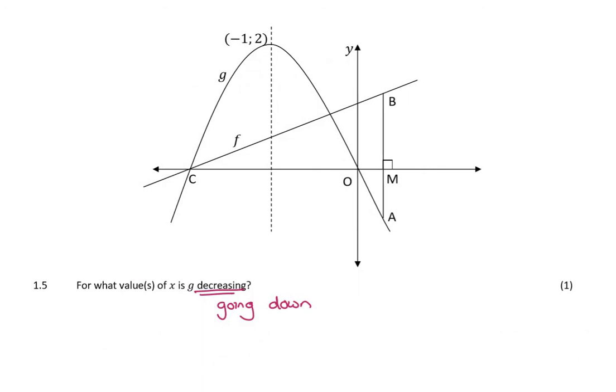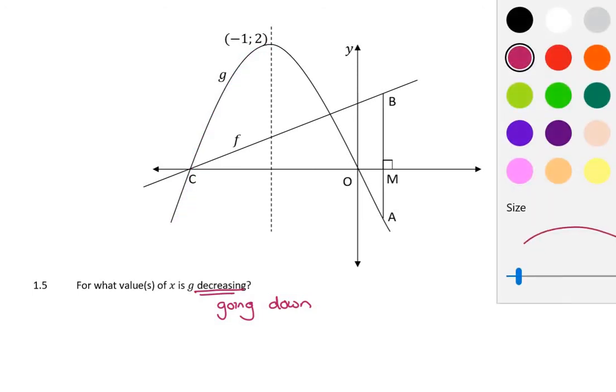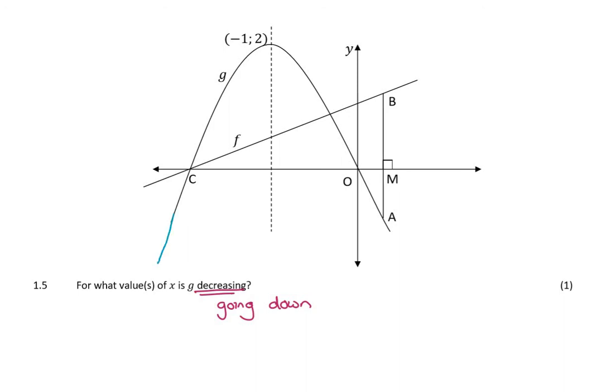The next question says for what values of x is g, which is the parabola, decreasing? Which basically means going down. Now, most people get this question wrong because they go, oh, look, the graph's going down there and it's going down there. It's always going down. But just remember, we read from left to right. So basically, we say to ourselves, as x increases, so as we move along the graph, what's the parabola doing? Now, the parabola's going up, up, up, up, up. Then it kind of stops for a second. It's stationary and then it goes down, down, down, down, down, down. So when we read from left to right, as long as my x values were greater than that turning point, the graph was going down.